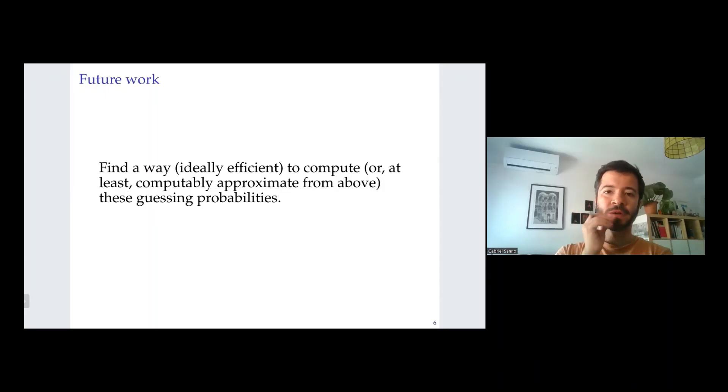As for future research directions, I guess the most important one, and one that would certainly be appreciated by people working in the design and manufacturing of quantum devices, is to find a way that is efficient to compute or at least approximate from above this guessing probability. So far we have no way. So this is future research. So with this I would like to conclude. Thanks for viewing this video.